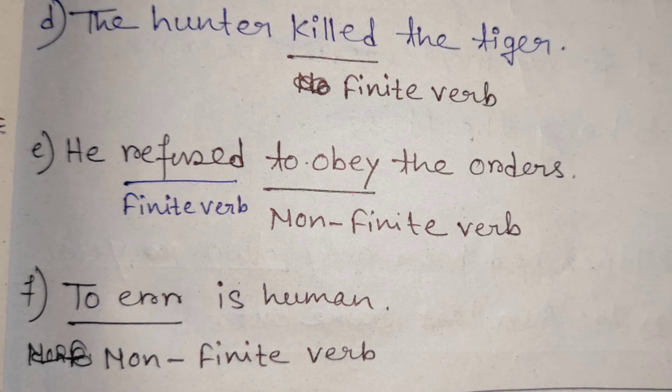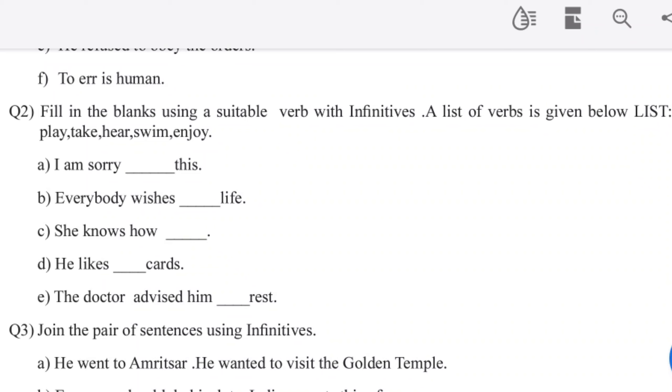The hunter killed the tiger — 'killed' is a finite verb. He refused to obey the orders — 'to obey' is a non-finite verb. To err is human — 'to err' is a non-finite verb.